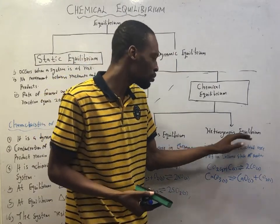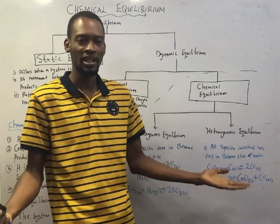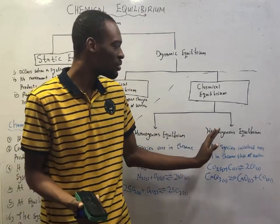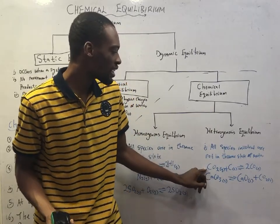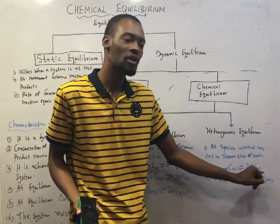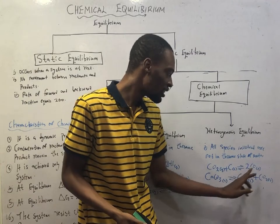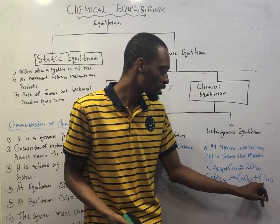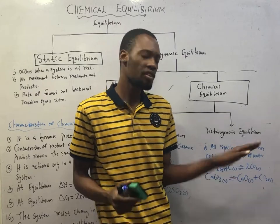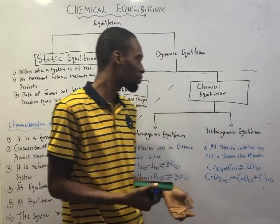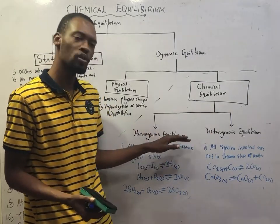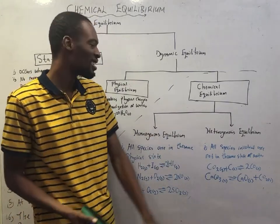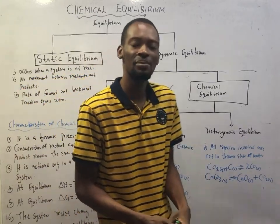In heterogeneous equilibrium, all species involved are not in the same state of matter — some may be liquid, some gas, some solid. For example: CO₂(g) + C(s) → 2CO(g), where we have gas, solid, and gas. Or limestone CaCO₃(s) decomposing to give CaO(s) and CO₂(g) — solid, solid, and gas. They are not all in the same state of matter.